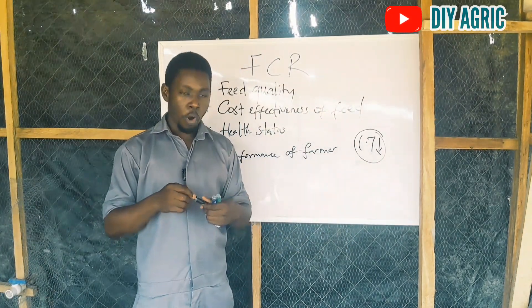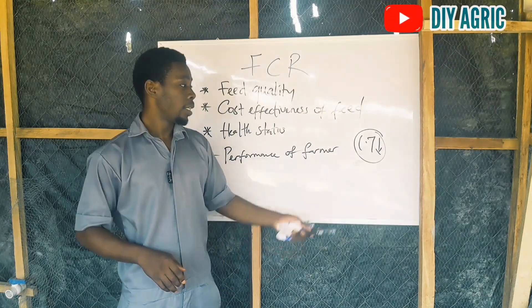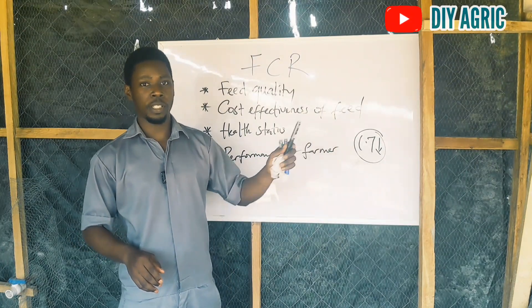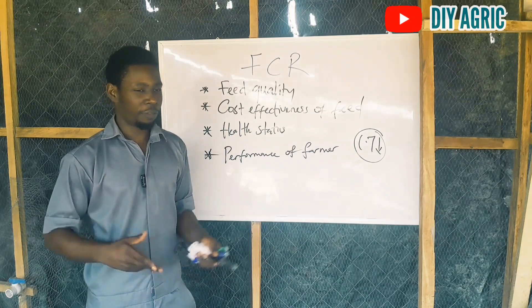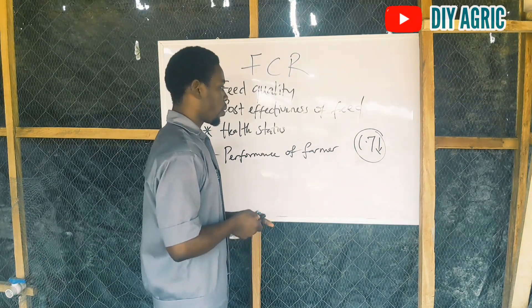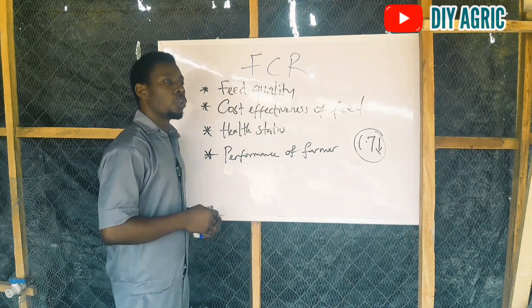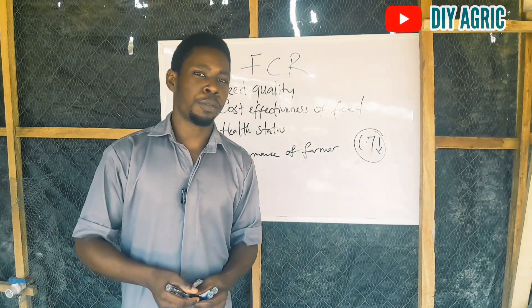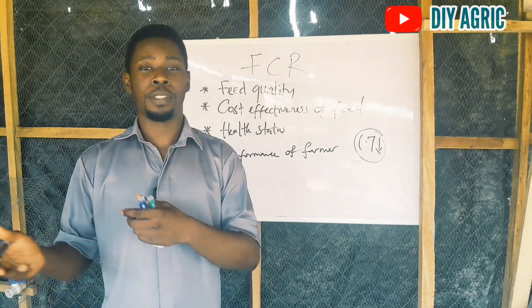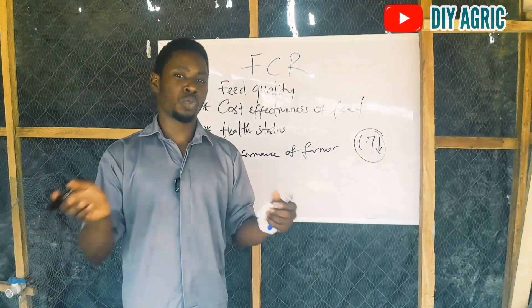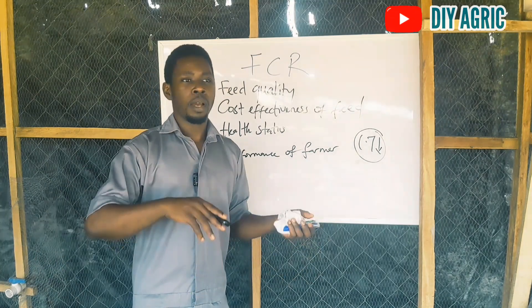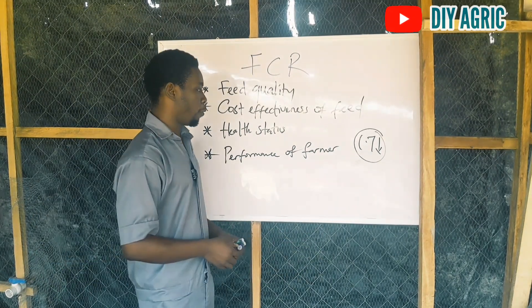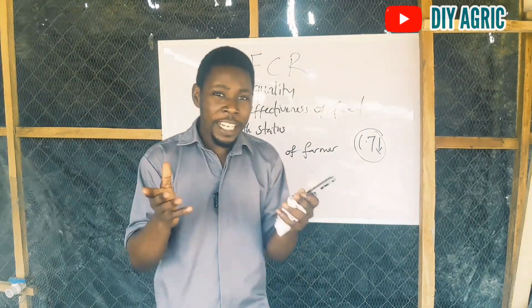All those things will impact your final FCR results. I advise you to look towards getting 1.7 or even something lower than that. It's not easy to get something like that, but it's very possible. Don't settle for an FCR of 2, where your feed consumed is twice the live weight of the birds.